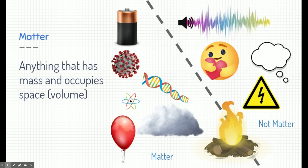So what is matter? Matter is anything that has mass and occupies space. Take a look at these pictures here. Things to the left of the dotted line are matter — things like batteries and viruses, DNA, atoms, clouds, wind, and even balloons filled with different types of gases. Even the fire pit you sat next to holds matter because the logs have mass and they occupy space.